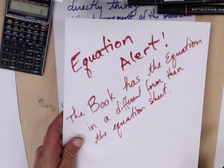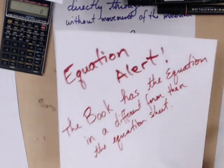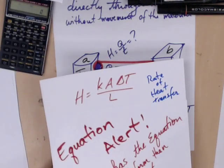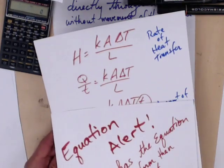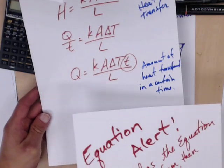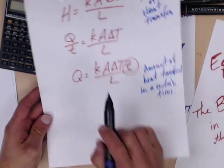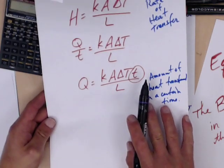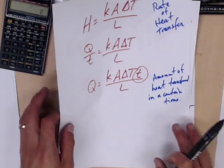Now, there is an equation alert. The book has the equation in a different form than the equation sheet. So we, the college board, uses this form. Now you do a little bit of math and you move things around. And the book looks at the amount of heat transferred in a certain amount of time. So it puts T, so it takes T and it moves it to the other side. So when you're using it in the book, it's going to look a little bit different. So let's actually do one.